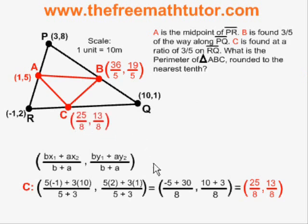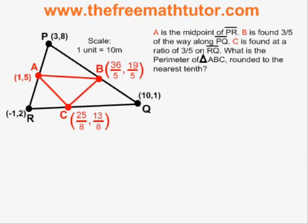Now that I have found the coordinates of A, B, and C, if I want to know the perimeter of triangle ABC, I have to use the distance formula three times to find the lengths of AB, BC, and CA. Let's start with AB.